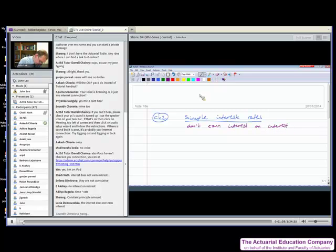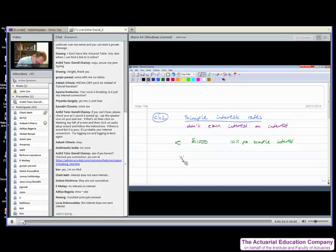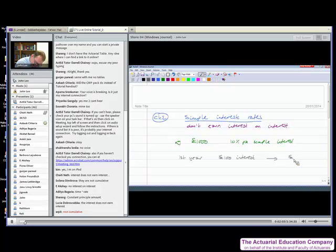So let's do a quick example. Supposing I invest £1,000 in a bank and we have 10% per annum simple interest. Well, that would mean in the first year, we'd work out 10% of our £1,000, which is £100. So we would have £100 interest. So at the end of that year, we'll have our £1,000 we invested and the £100 interest. So that will be our total.